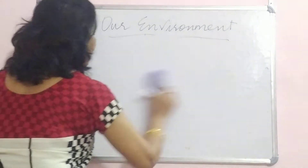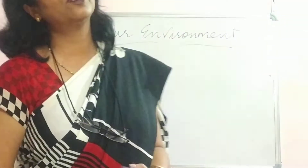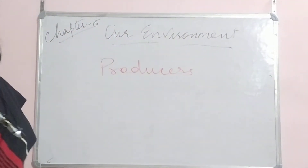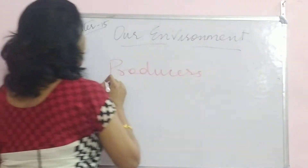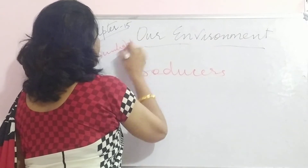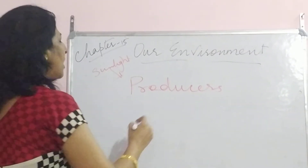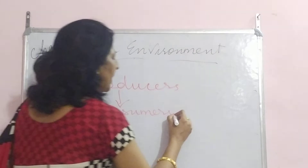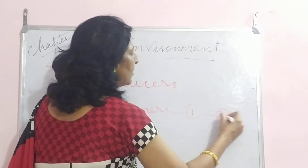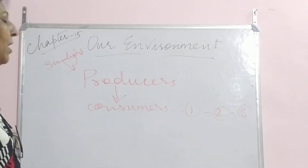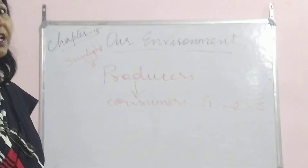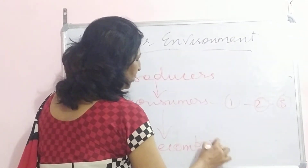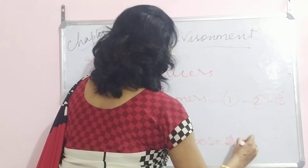Now, producers — you know very well — producers are all plants containing chlorophyll which prepare food by the process of photosynthesis, and they require sunlight. Sunlight is most important for producers. These producers will be consumed by consumers. Consumers may be any number: it may be one consumer, two consumers, or three consumers — primary consumer, secondary consumer, tertiary consumer — the number is not fixed. After that, at the end, everything has to be decomposed by decomposers.